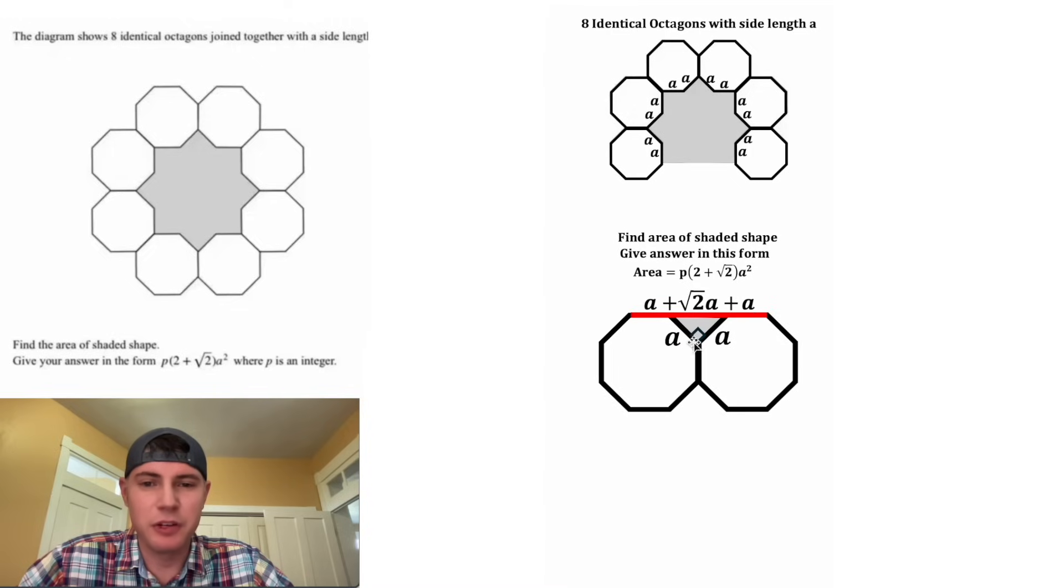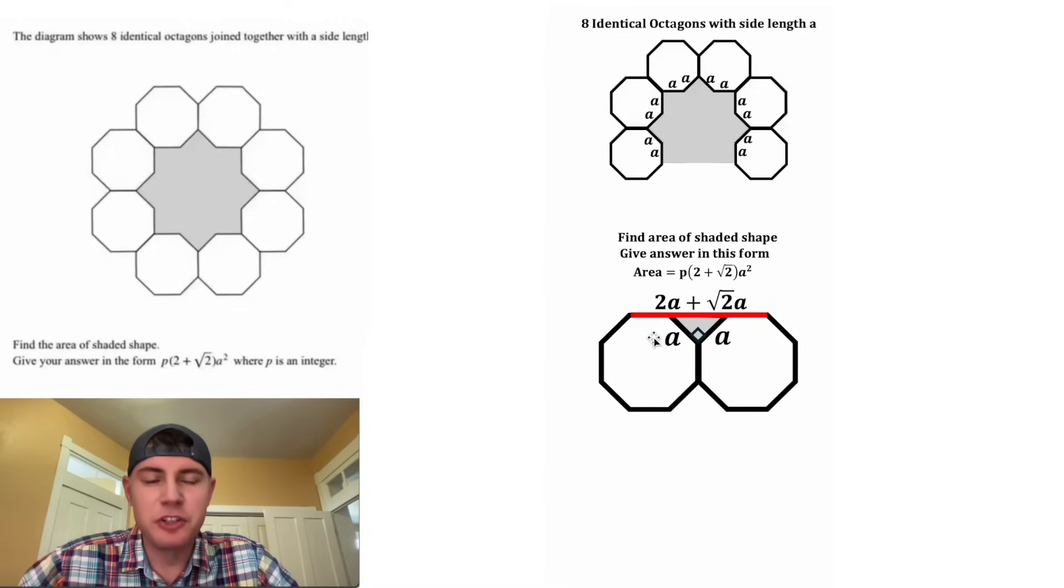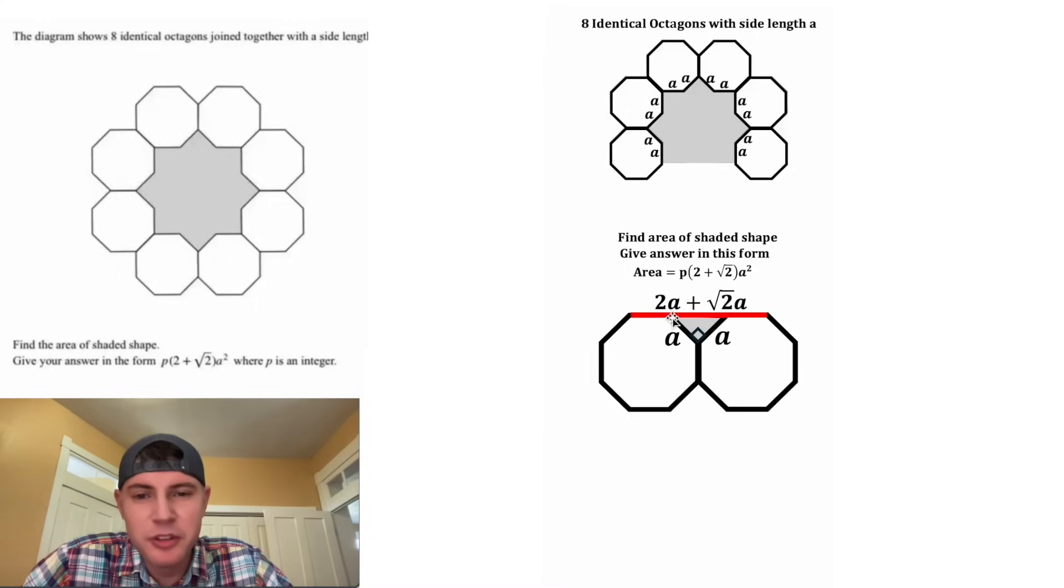This A plus this A will give us 2A, and we end up with 2A plus the square root of 2 times A. And both of these terms have an A, so let's factor out that common A. And we're left with A times the quantity 2 plus the square root of 2.